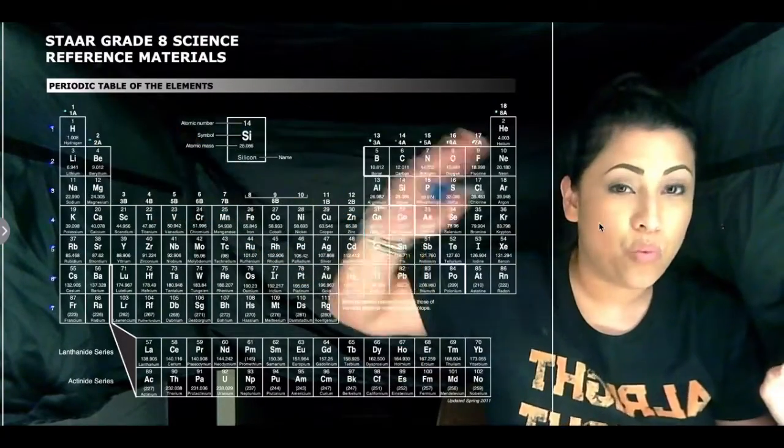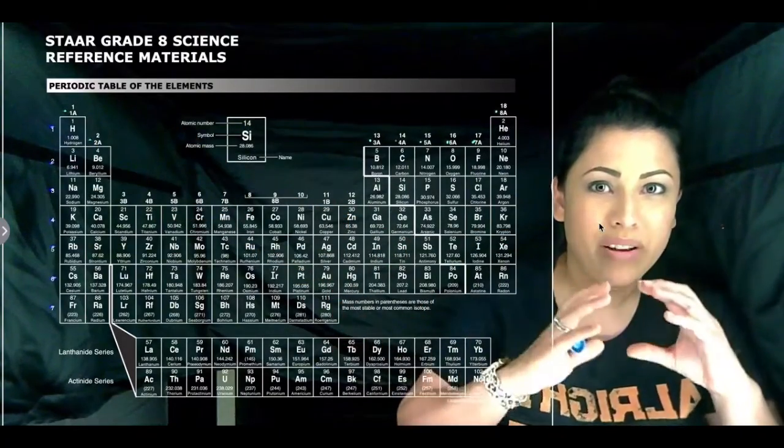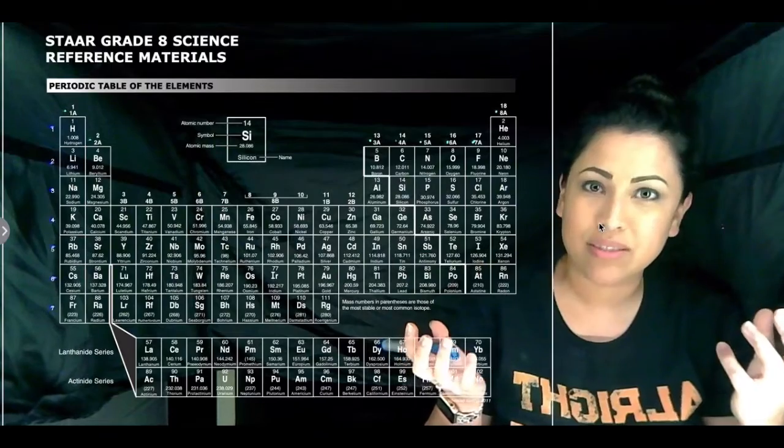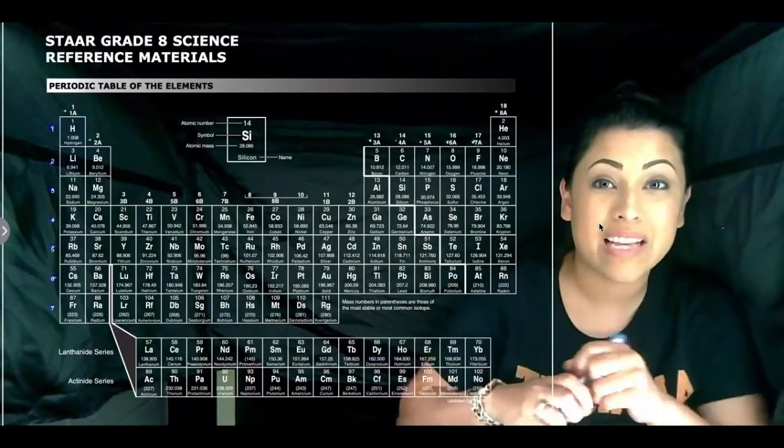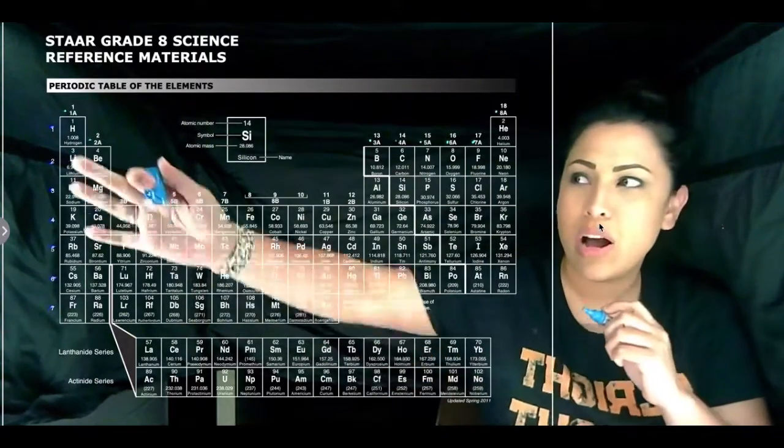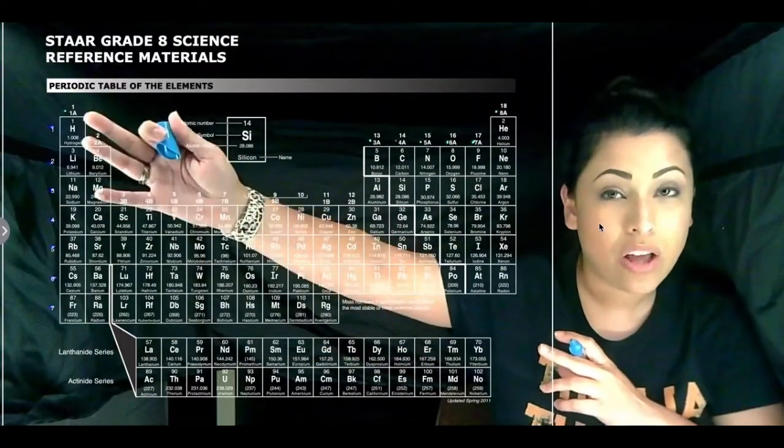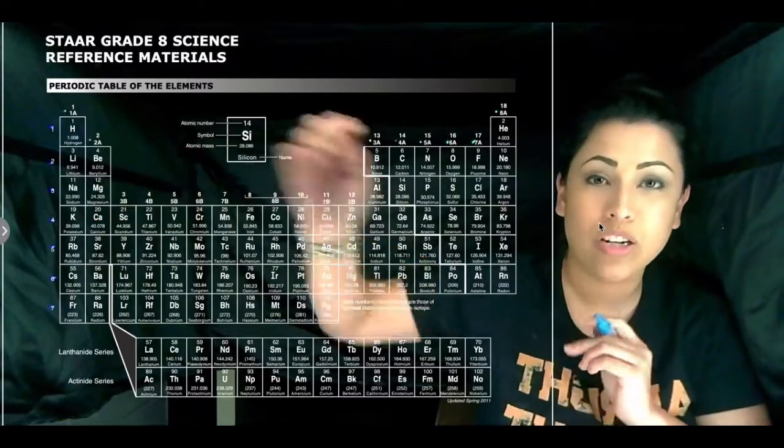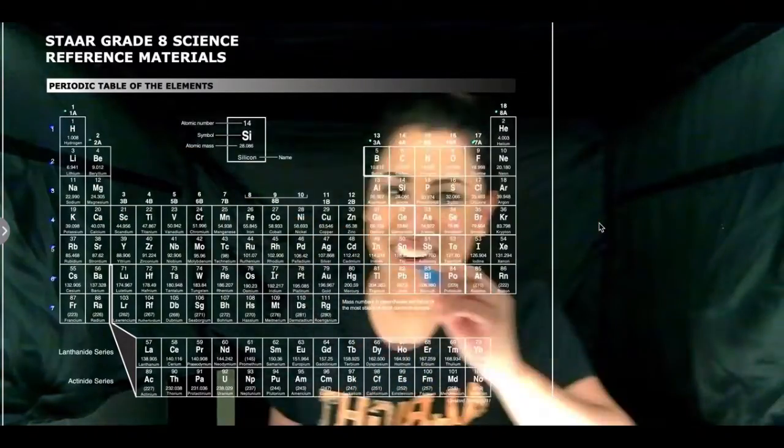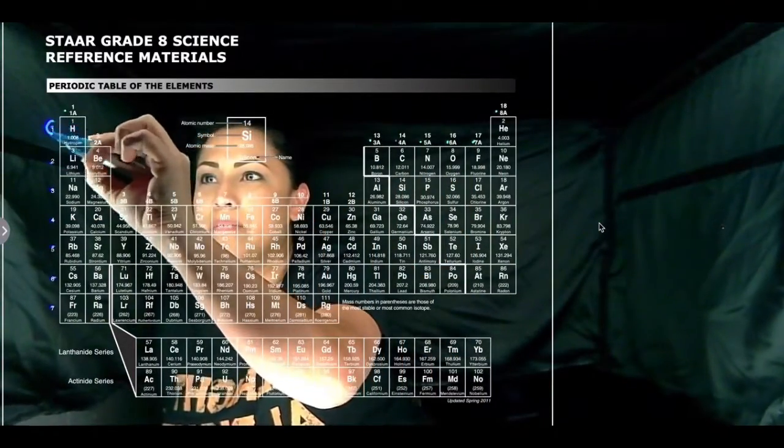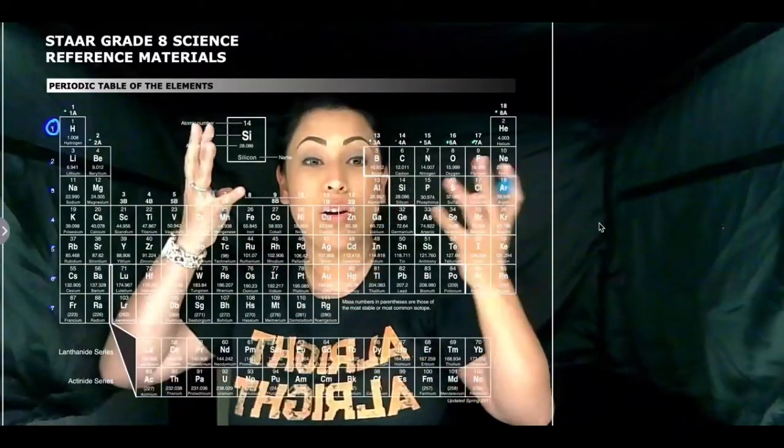So everything in row one has how many rings or energy levels? Yeah, so everything has one. So we're going to draw one circle around the one. Go ahead and get out your periodic table if you don't have it out yet and follow along with me. So on the one we're going to draw how many circles? So right here it has one ring or one circle.